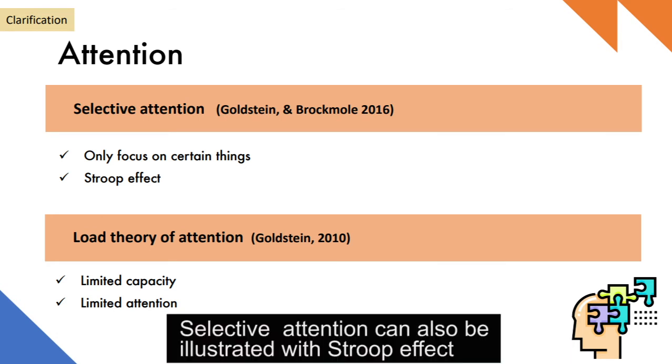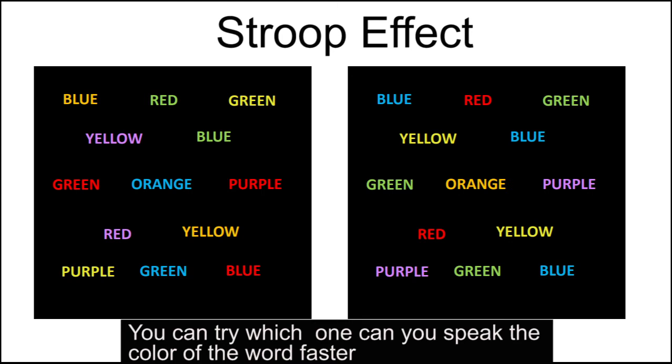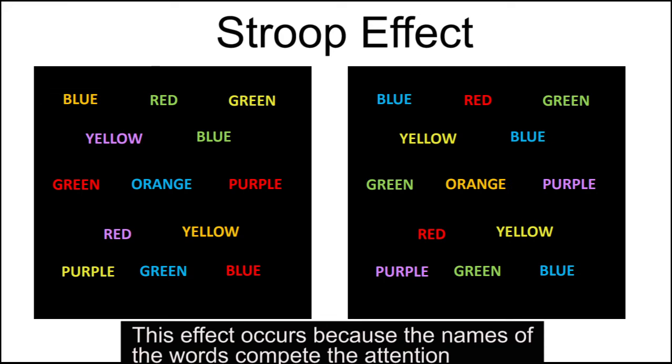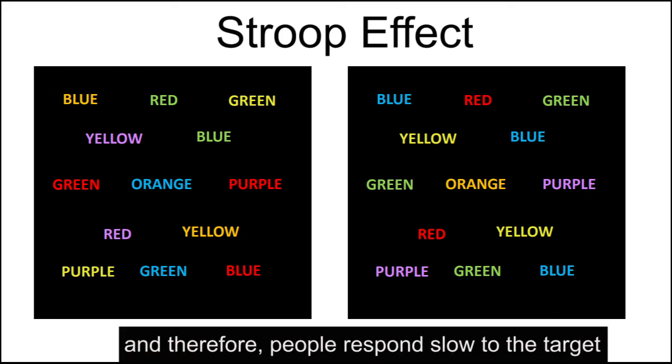Selective attention can also be illustrated with Stroop effect. You can try which one you can speak the color of the word faster. This effect occurs because the names of the words compete for attention and therefore people respond slower to the target.